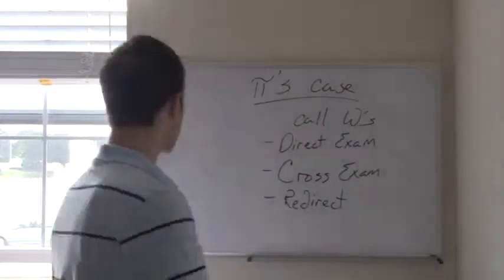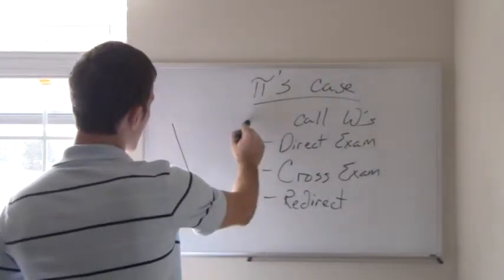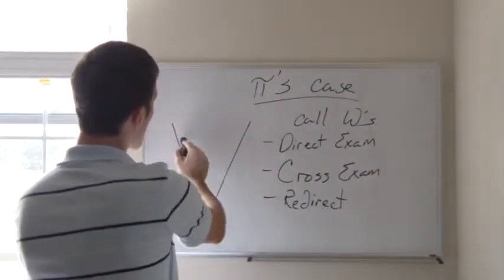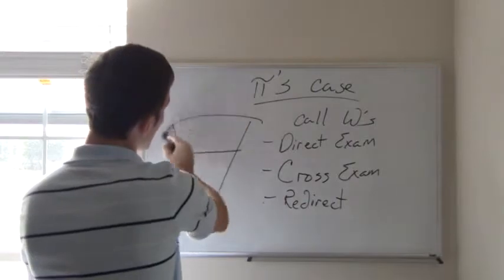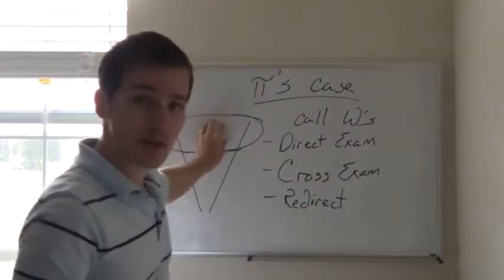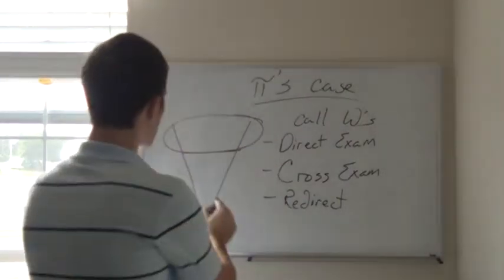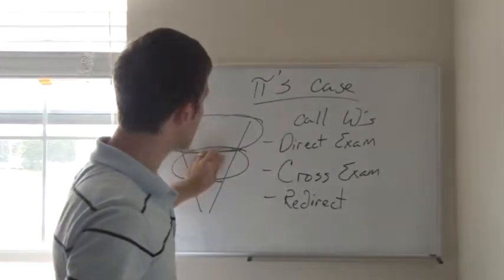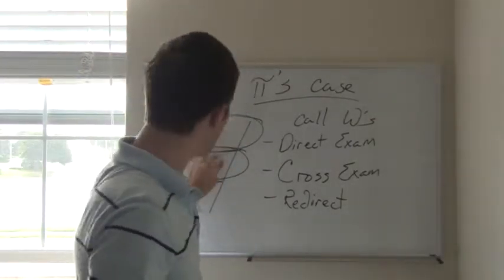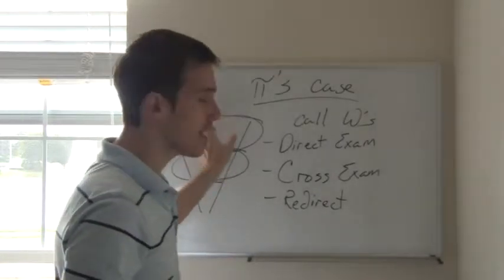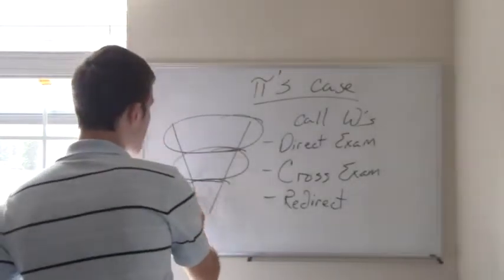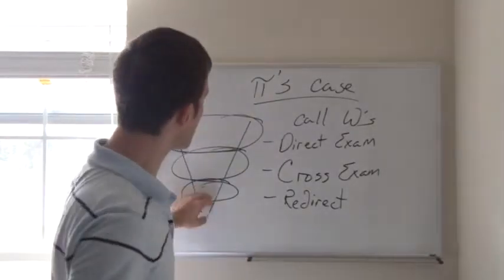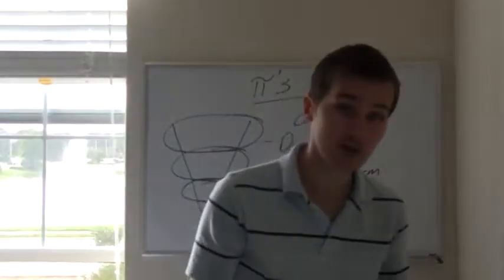At each point of this, it's worth noting, the subject matters get smaller and smaller and smaller. What's discussed during direct is pretty broad. What's expressed during cross is narrower, and it has to pertain to what was talked about in direct. In redirect, it's even smaller. It has to be something that was discussed in cross, in general.